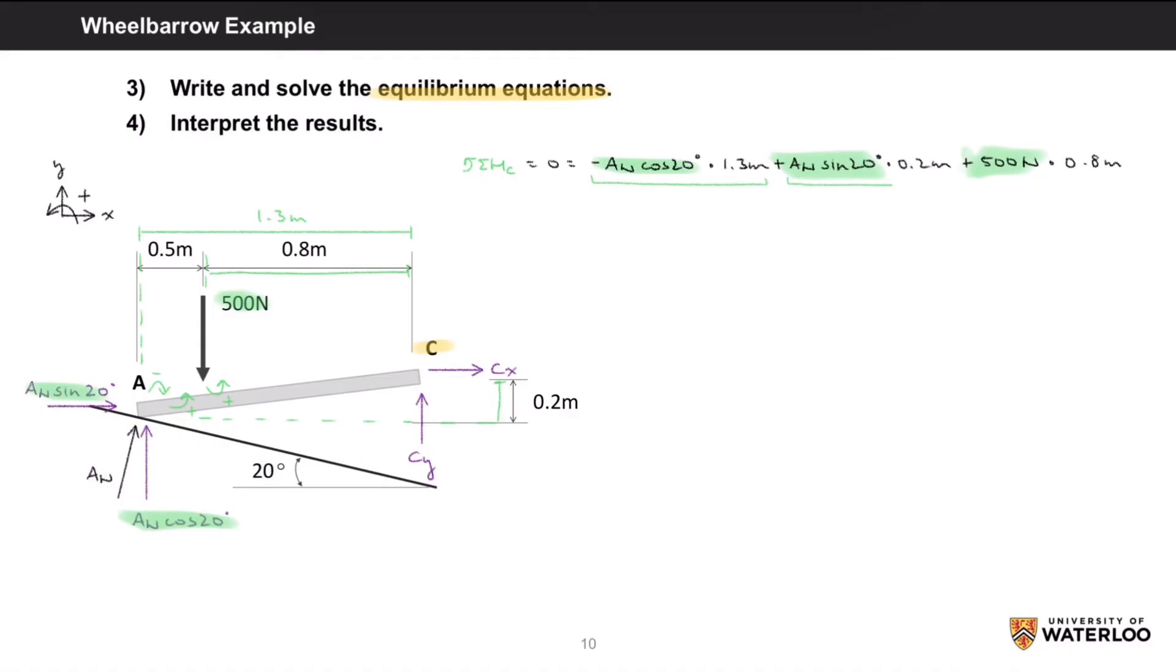See here how both of these terms have AN? We can combine them together to get negative 1.153 meters times AN, and then add this 500 newtons times 0.8 meters, which will give us 400 newton meters. Rearranging this equation for AN, we will get a value of 346.9 newtons.